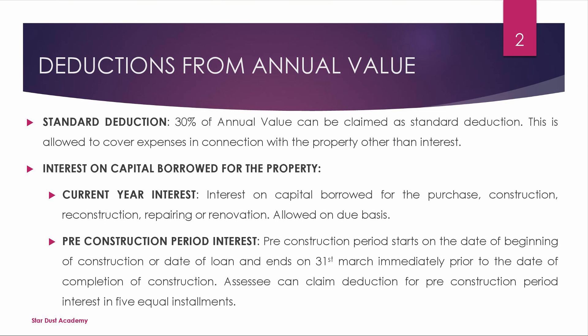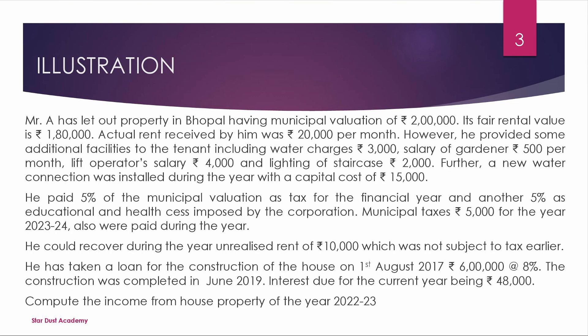The assessee can claim deduction for pre-construction period interest in 5 equal installments — that is, 1/5th of the total pre-construction period interest is allowed as deduction each year for 5 years.